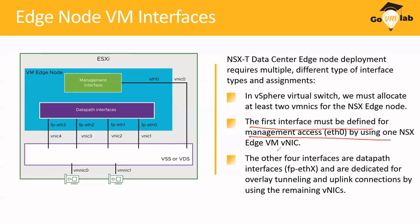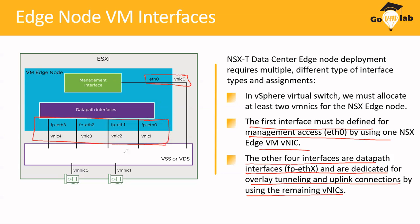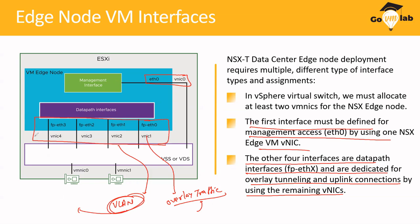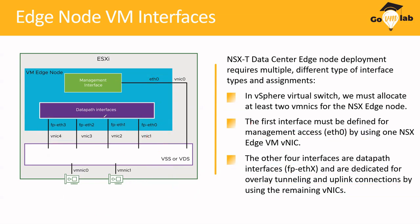The four FastPath interfaces are dedicated either for VLAN traffic or overlay traffic. If an ESXi node is sending traffic, the overlay interface receives the packet. When the packet needs to go out, the VLAN NIC forwards it to the external network. These FastPath interfaces of the edge node are responsible for overlay traffic and connectivity to the external network, which we call uplink connectivity.